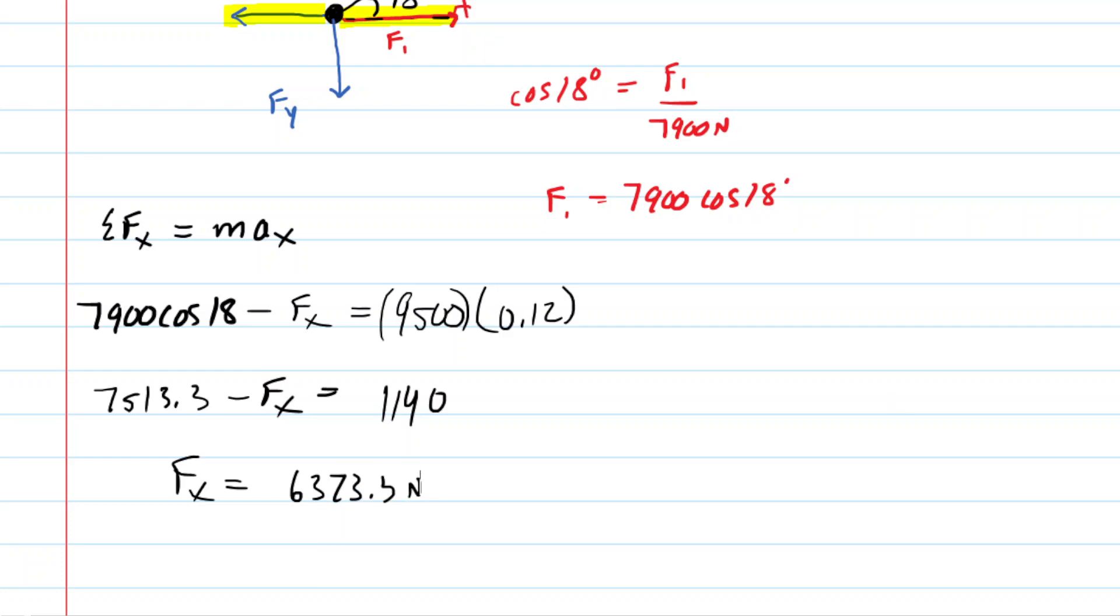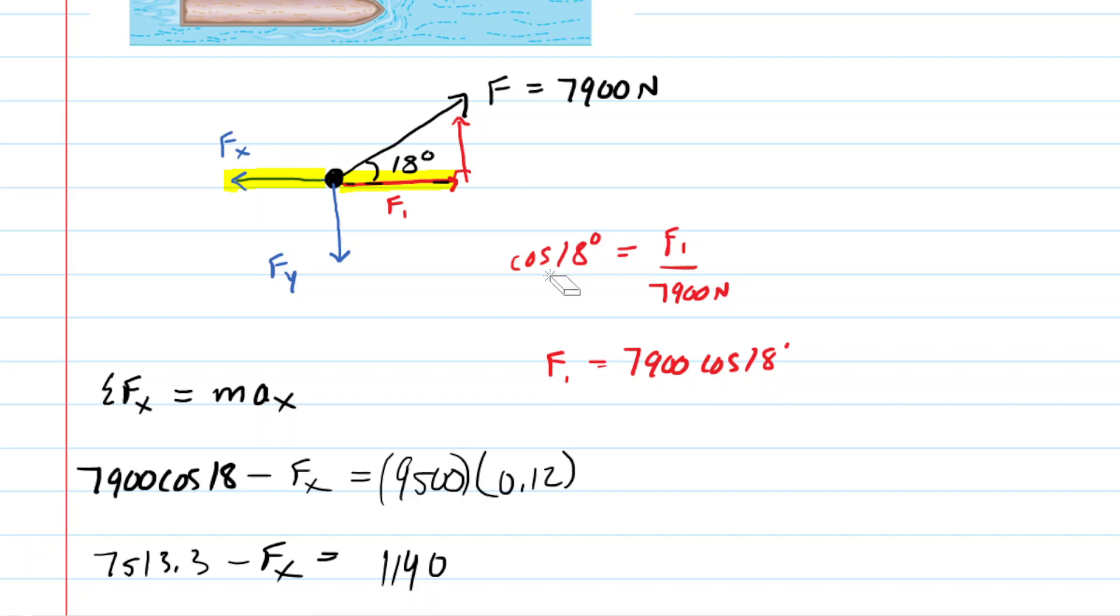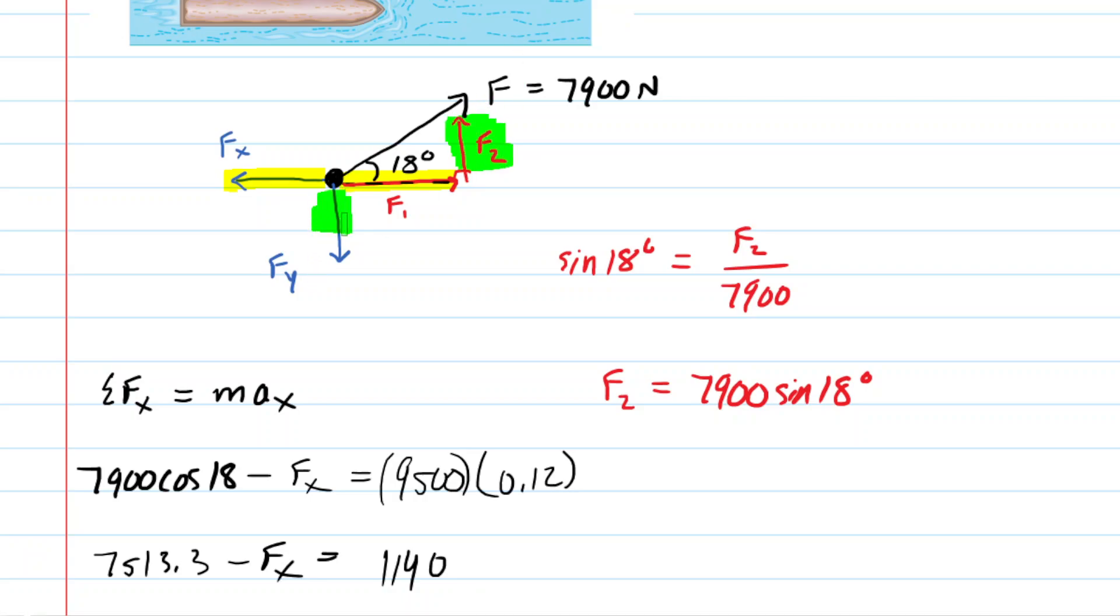We can go back and do a similar analysis for the Y direction. Why don't we find the Y component of that 7,900 Newton force? So we'll call that F2. Looking again at that right triangle, you have the sine of the 18-degree angle is equal to the side opposite of that angle, which is F2, divided by the hypotenuse, which again is 7,900. Multiply both sides by 7,900, and you would see that the Y component is 7,900 times the sine of 18 degrees. So now we're just going to look at the forces in the Y direction. We have the force that we just deduced, and then we have the other force, which is Fy. Notice that's pointing down, so that's going to be a minus.